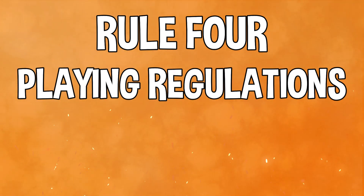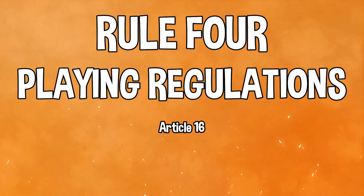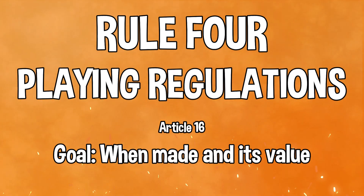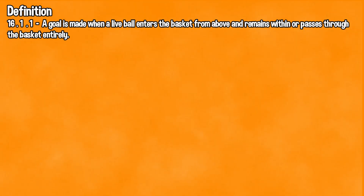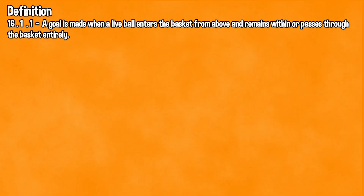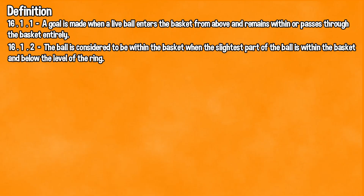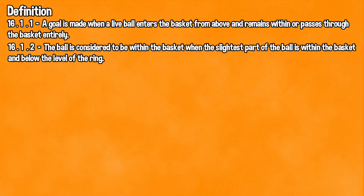Rule 4. Playing Regulations. Article 16: Goal, when made and its value. Definition: A goal is made when a live ball enters the basket from above and remains within or passes through the basket entirely. The ball is considered to be within the basket when the slightest part of the ball is within the basket and below the level of the ring.